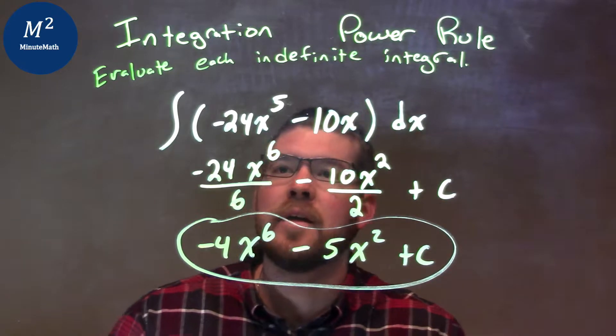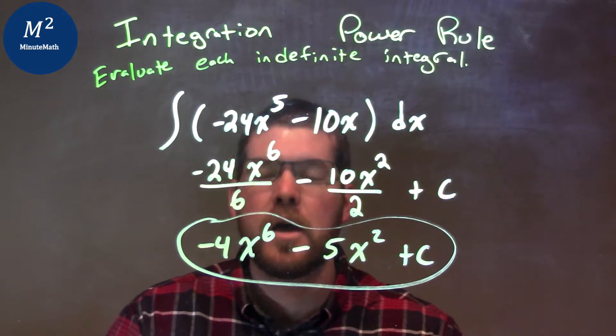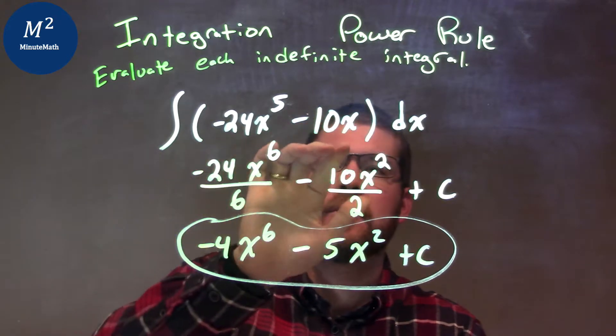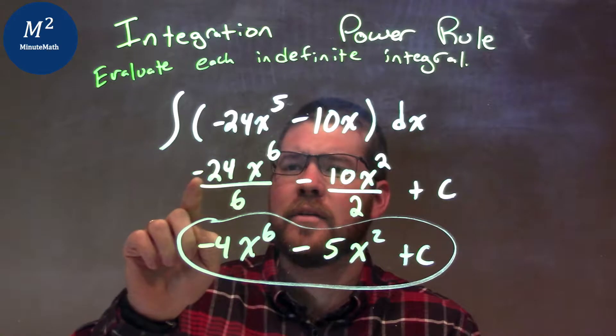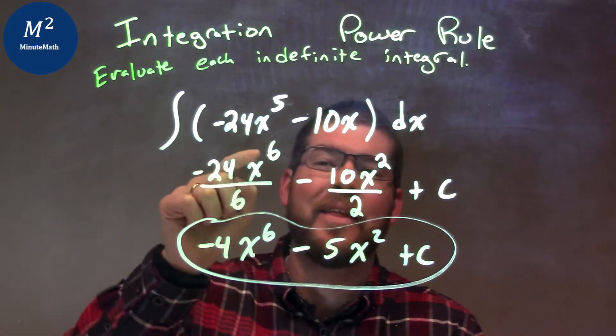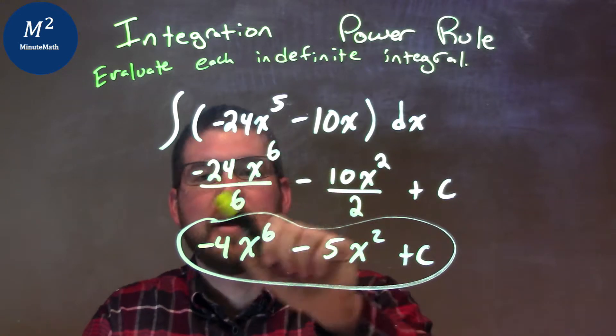Let's recap. We're given the integral of negative 24x to the fifth minus 10x dx. We can take the integral of each part here individually. We look at the first part here, negative 24x to the fifth, but we add the exponent by 1 and divide it by that new power in the denominator.